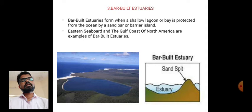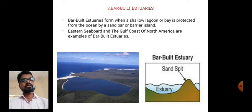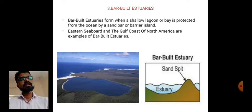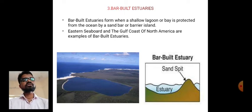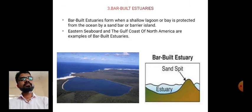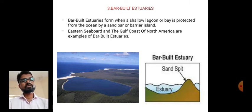The third type is bar-built estuaries. Bar-built estuaries form when a shallow lagoon or bay is protected from the ocean by a sand bar or barrier island. Where the sand spit is present, we call it a bar-built estuary. Examples are found along the eastern seaboard and the Gulf Coast of North America.